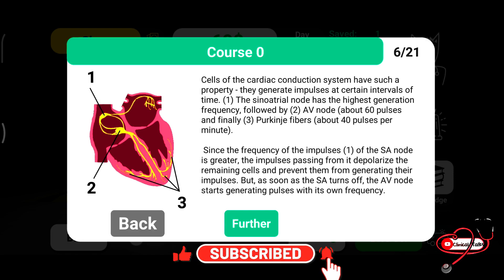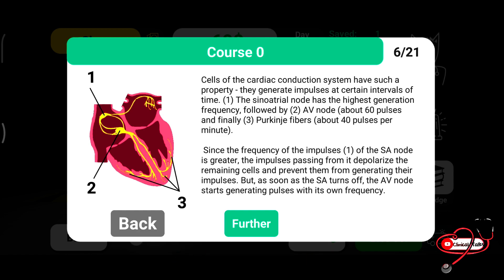Since the frequency of SA node impulses is greatest, it depolarizes the remaining cells and prevents them from generating their own impulses. But as soon as the SA node turns off, the AV node starts generating pulses. Simply put, if the SA node does not work, impulses can be generated through the AV node.